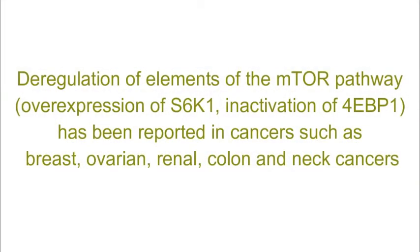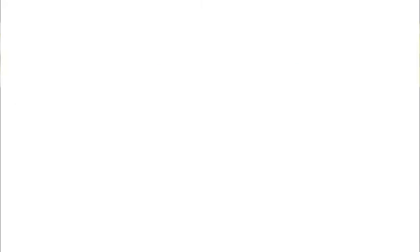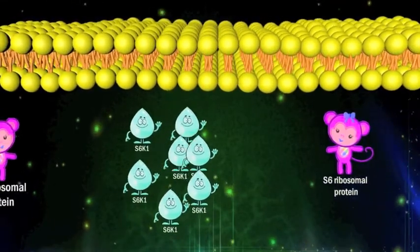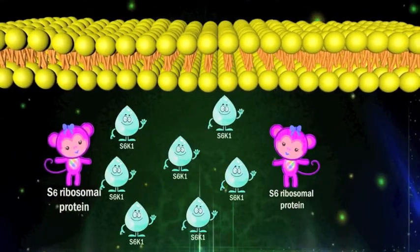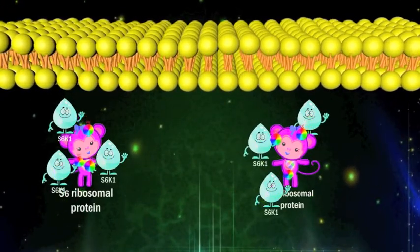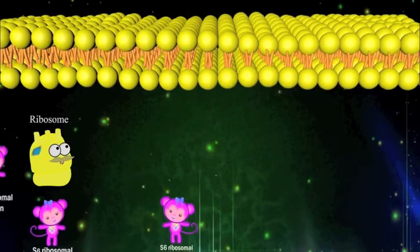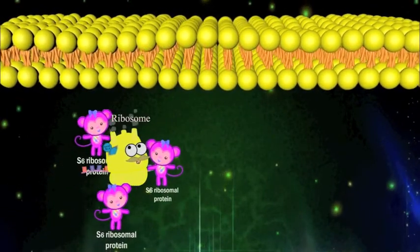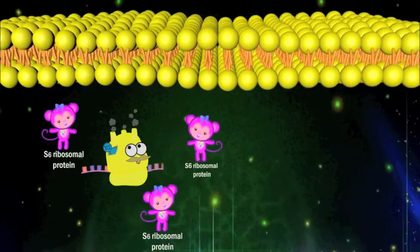Deregulation of elements of the mTOR pathway — for example, overexpression of S6K1 and inactivation of 4EBP1 — has been reported in cancers such as breast, ovarian, renal, colon, and neck cancers. Due to S6K1 overexpression, it phosphorylates several sites of the S6 ribosomal protein; therefore, the kinase activity of this protein leads to an increase in protein synthesis and cell proliferation.